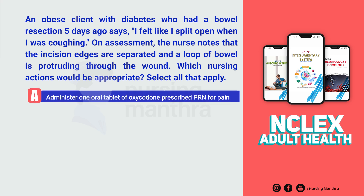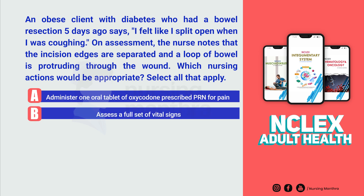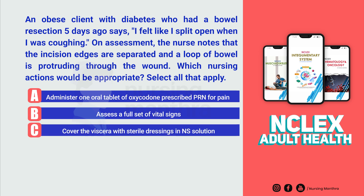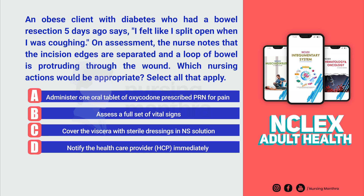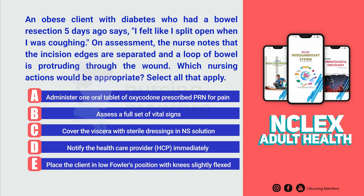Option A: Administer one oral tablet of Oxycodone prescribed PRN for pain. Option B: Assess a full set of vital signs. Option C: Cover the viscera with sterile dressing saturated in normal saline solution. Option D: Notify the healthcare provider immediately. Option E: Place the client in low Fowler's position with knees slightly flexed.